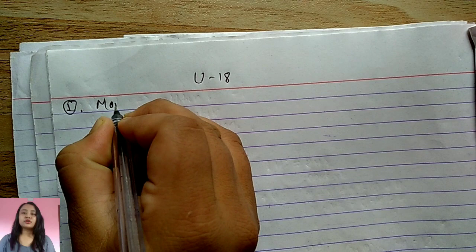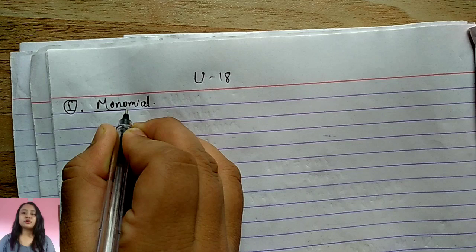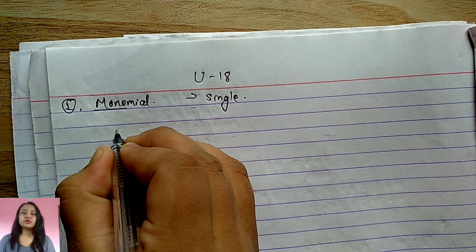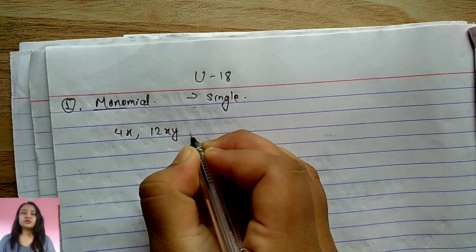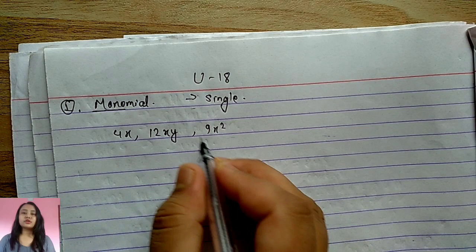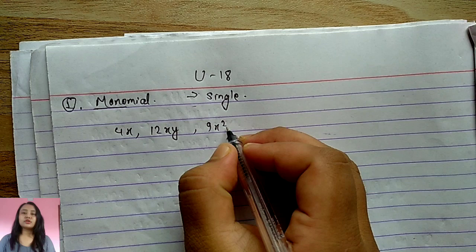Let's start with the monomial. From the word 'monomial,' we have the prefix 'mono' which means single. A monomial is an expression which has only one term — like 4x, 12xy, or 9x² — with no plus, minus, or division signs separating multiple terms.